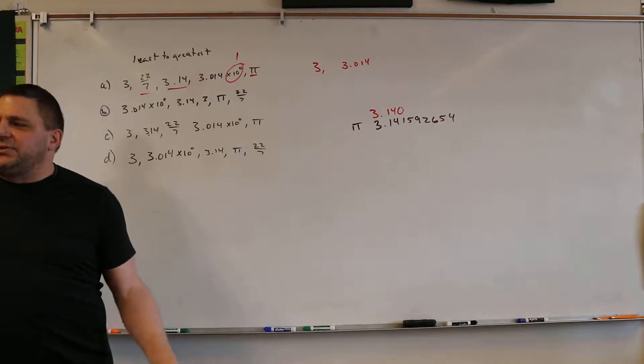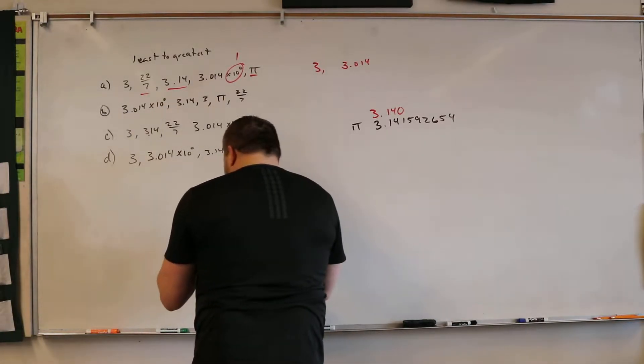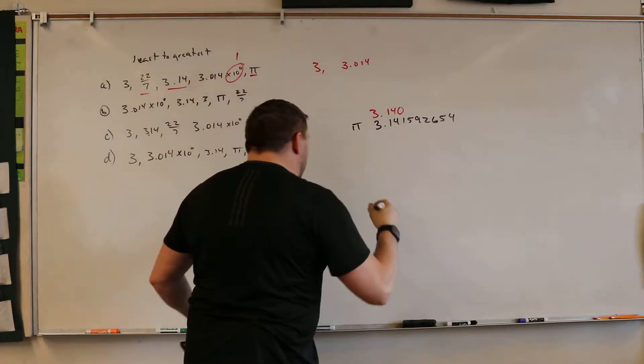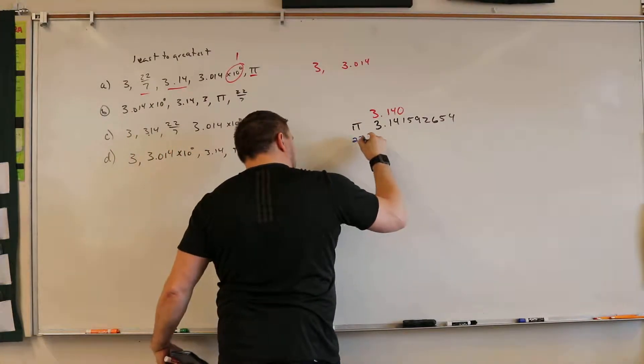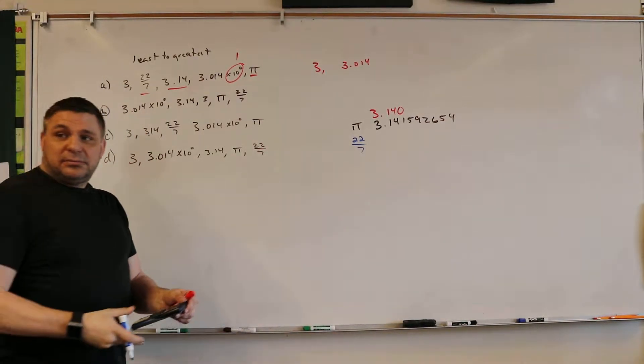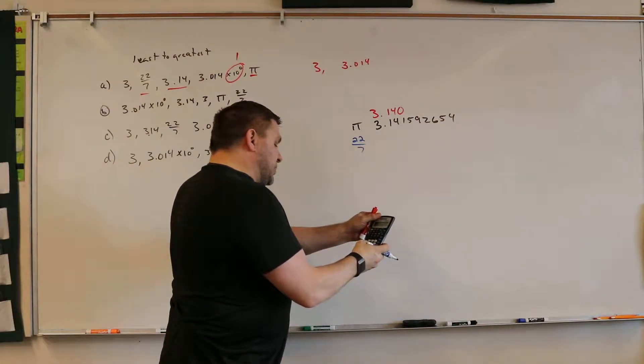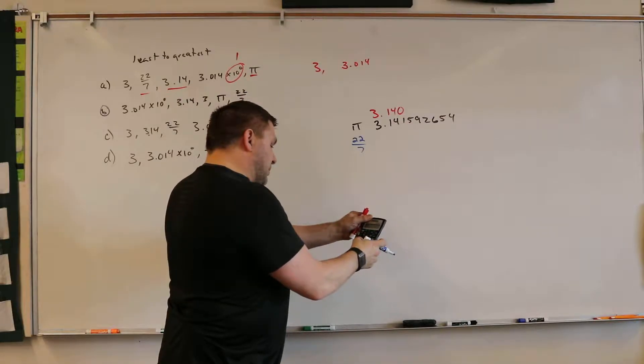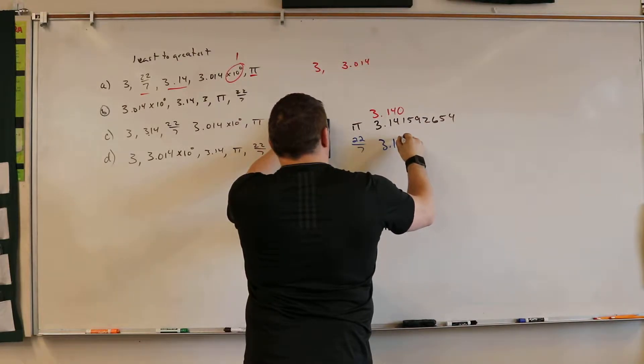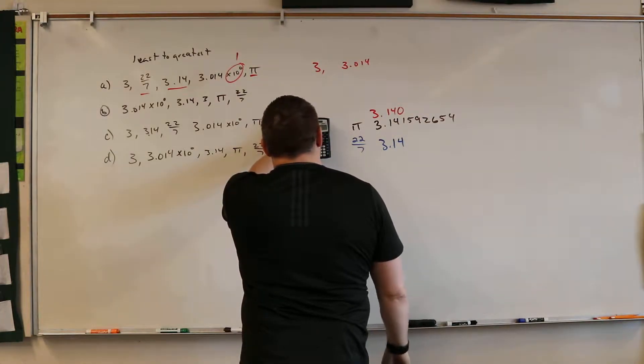Now if we bring up 22 over 7. How close is 22 over 7 to pi? It's not even 3. So what is 22 divided by 7? 3 point something. 3.14. Woo! They're all 3.14's.